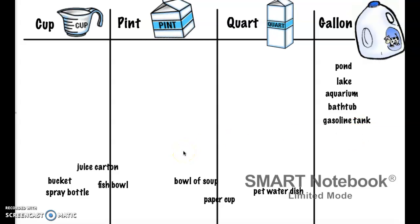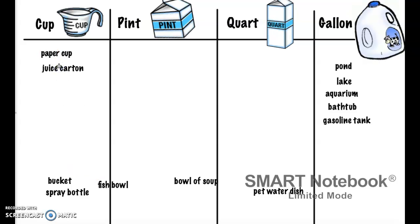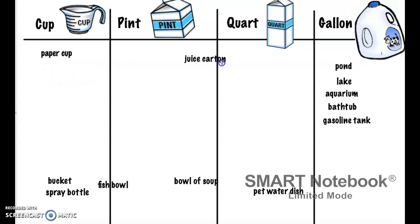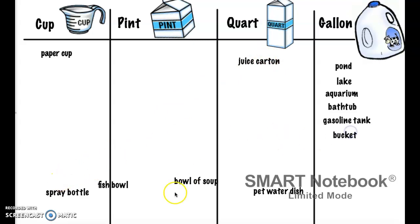Let's go back to the left side and do cup. That would definitely be a paper cup, and I would also say a juice carton — like the juice carton you would get at lunch sometimes. The juice carton could also go under another unit. I'll leave it here just to be on the safe side. A bucket is definitely going to be a gallon. A spray bottle — a cup would not be enough, a quart would be too much, so I'm going to put it under pint. Remember that a pint is like a bottle of water.